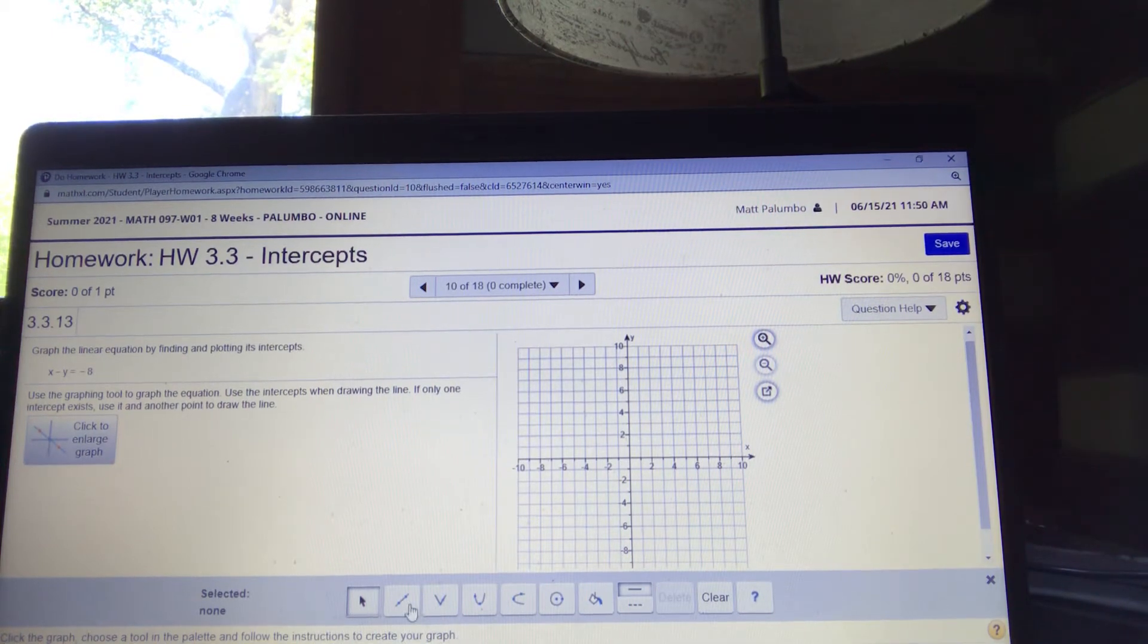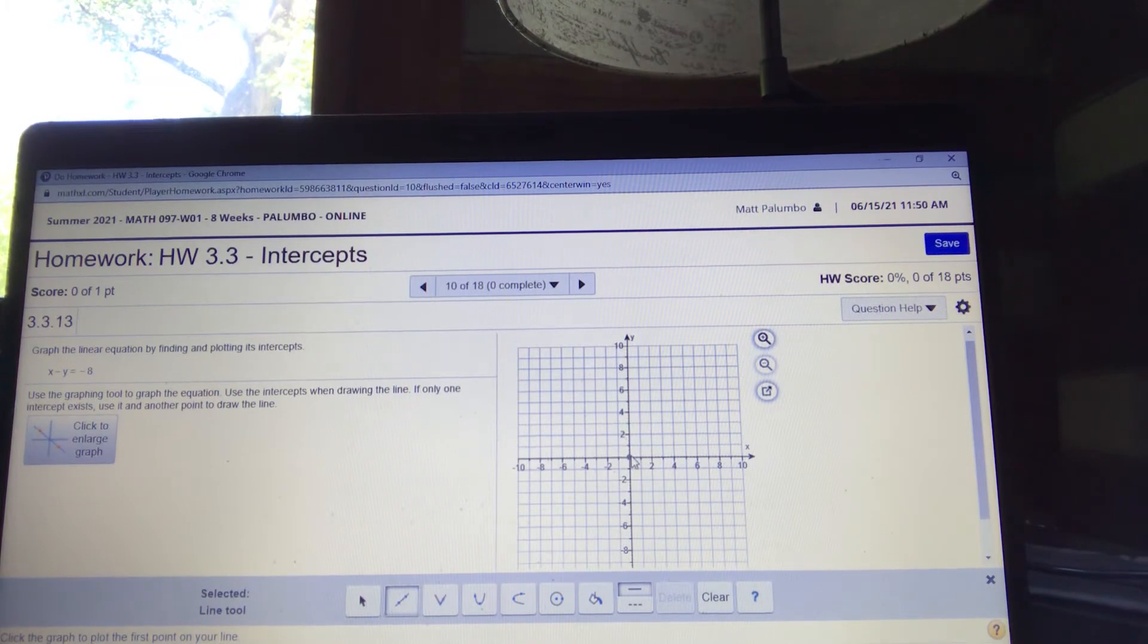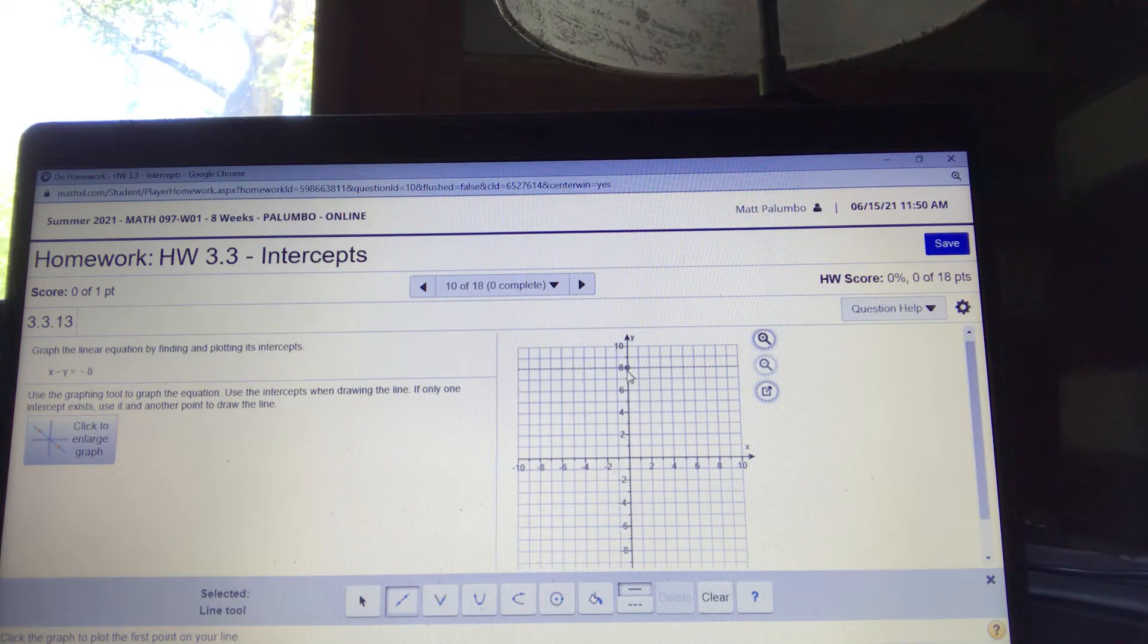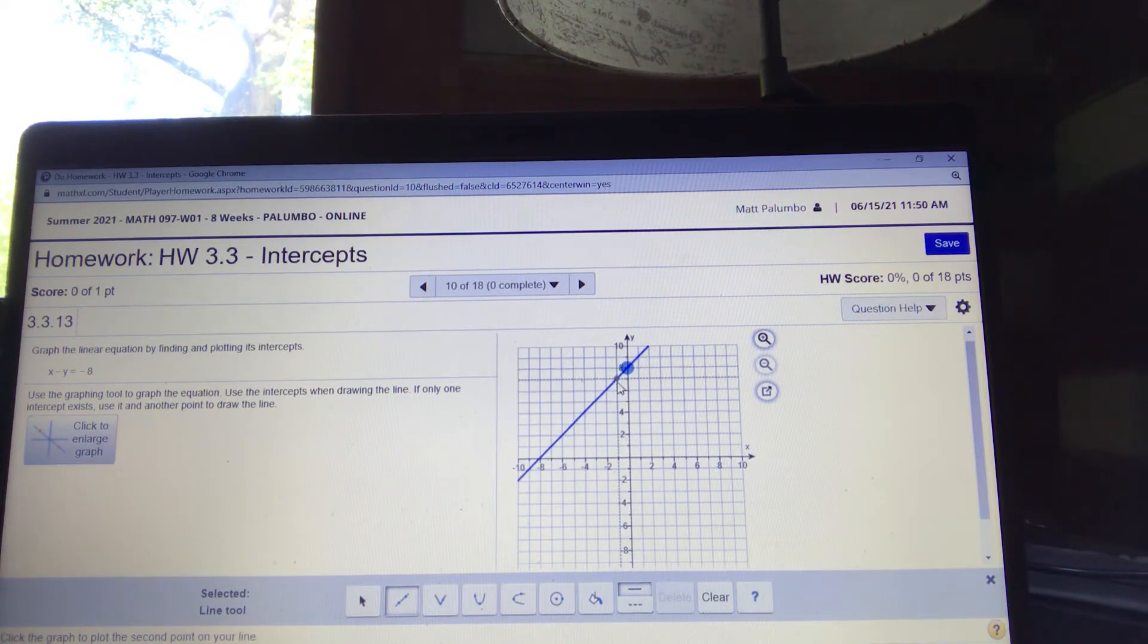So let me grab the line. And now let's put the real points. It's going to be zero and eight. So that's zero to the right in the x direction, eight in the y direction. Now, my next point is going to be negative eight, zero. Negative eight to the left and zero.